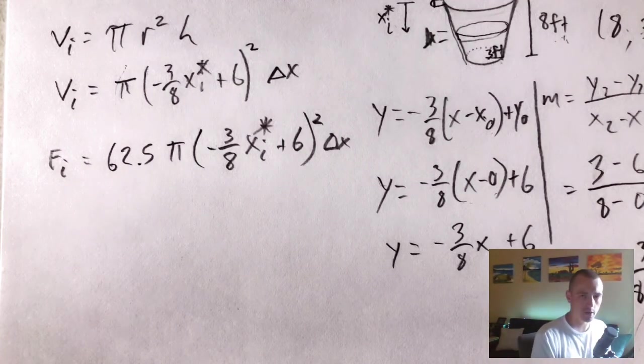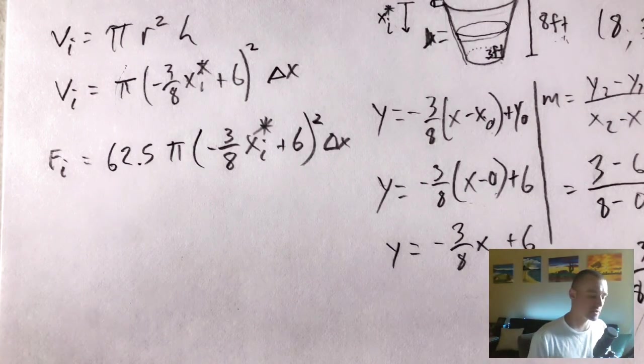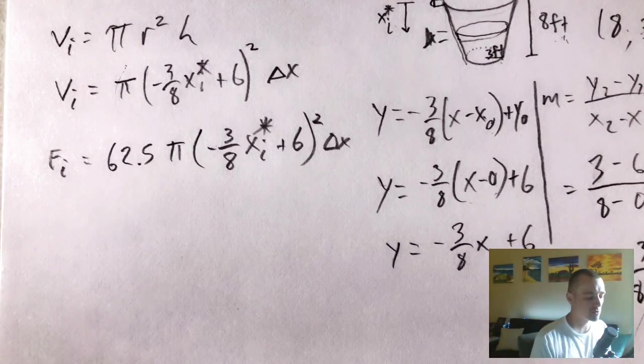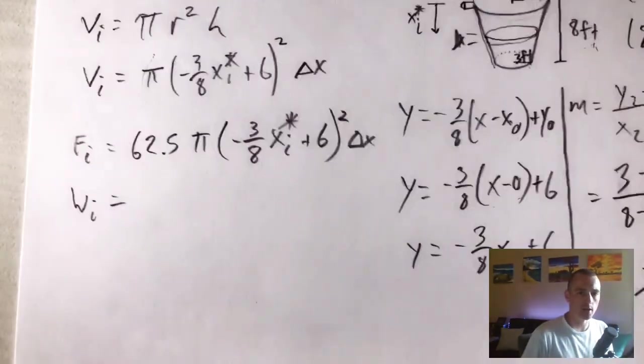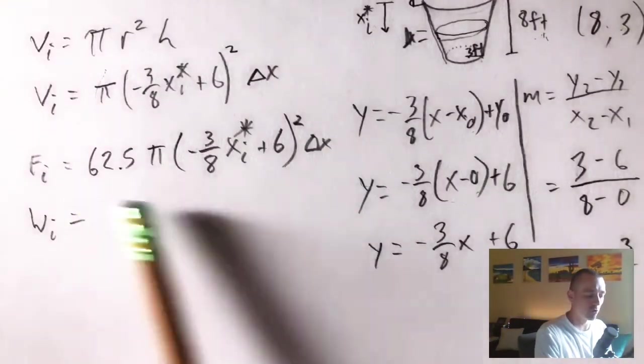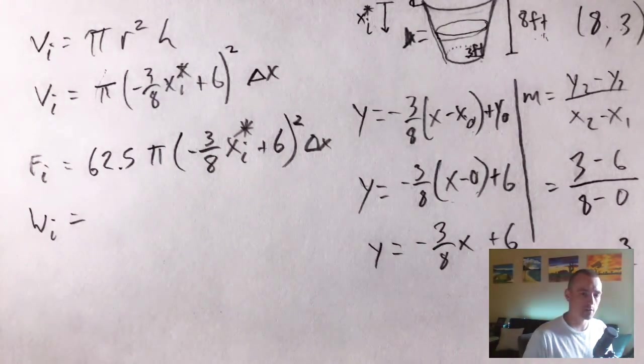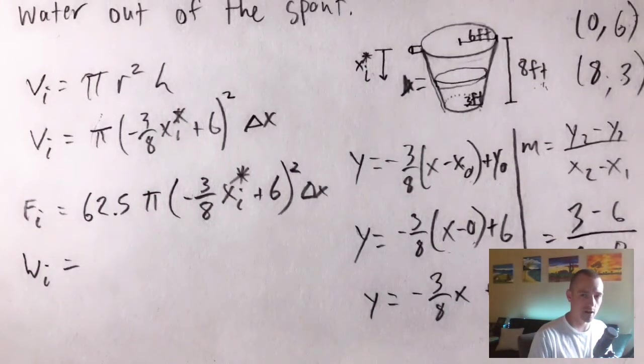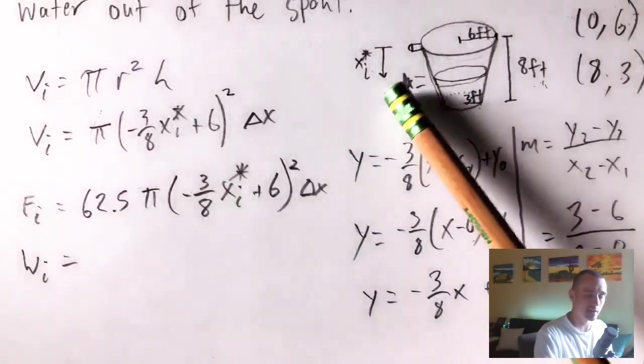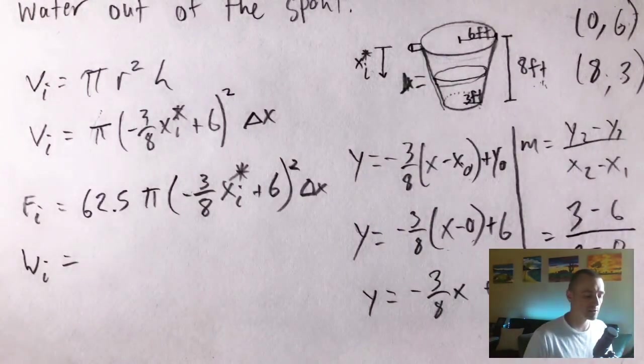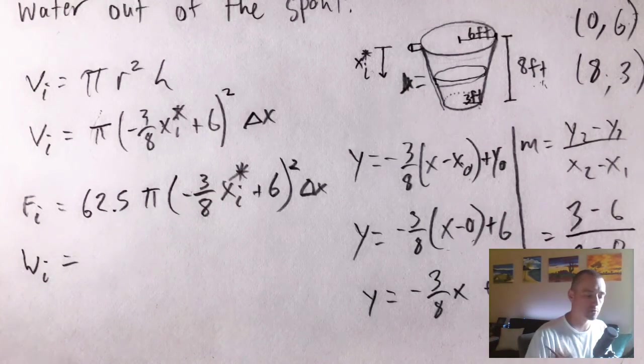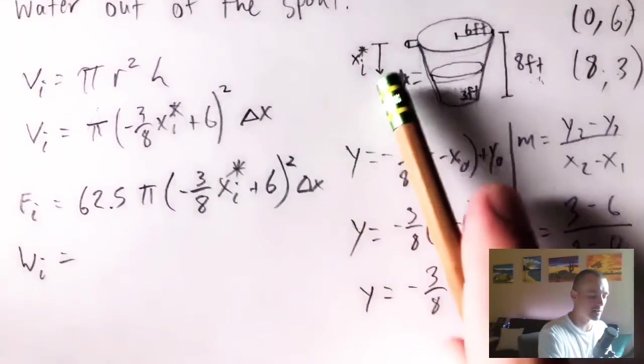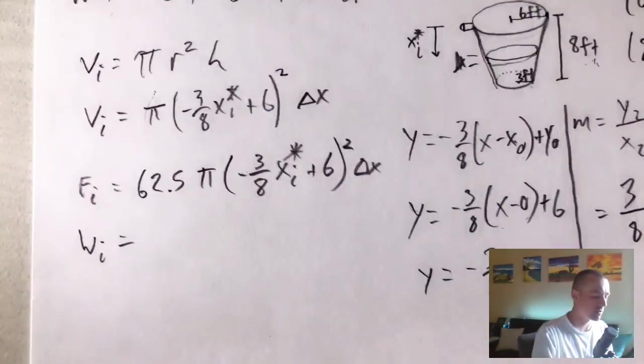I'm showing you how to use that equation right now. That work equation that's on there is that work is force times distance. So all we have to do to figure out the work required to lift the ice layer at this point is to multiply the force acting on that ice layer times the distance that we have to lift the ice layer up. Well, that is exactly what XI star represents. XI star is just the distance that we have to lift that ice layer up to the spout. So multiplying this by XI star should give us the work required to lift that Ith layer.